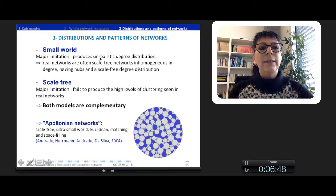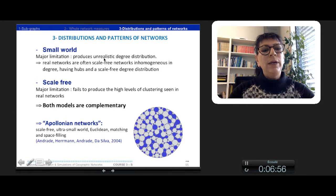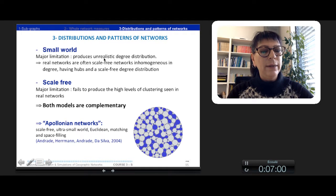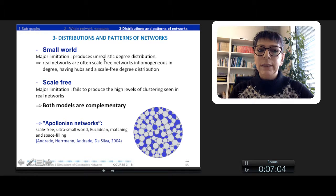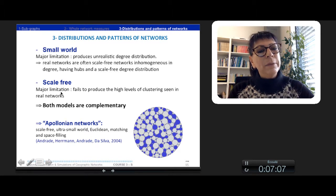At the opposite, the scale-free distribution has a major limitation as it fails to produce a high level of clustering seen in real networks as small world. So the two models are complementary.